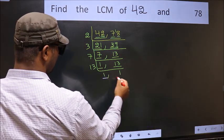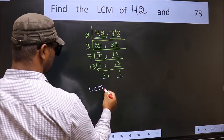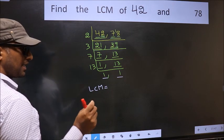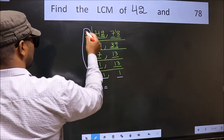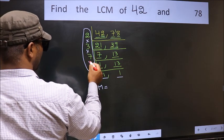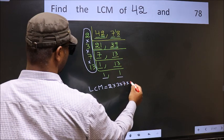So we got 1 in both the places. So our LCM is, LCM is the product of these numbers. That is 2 into 3 into 7 into 13.